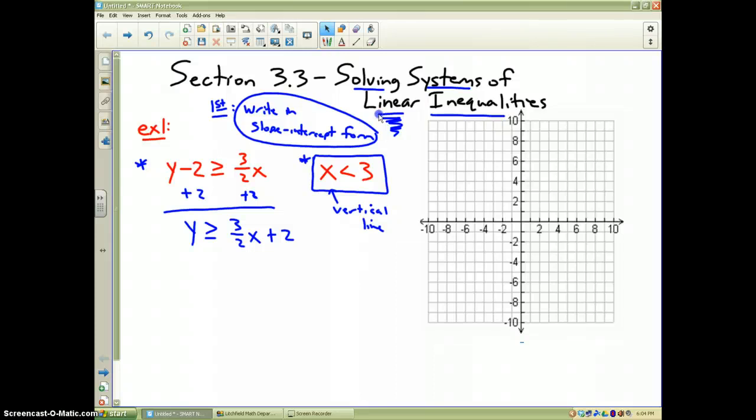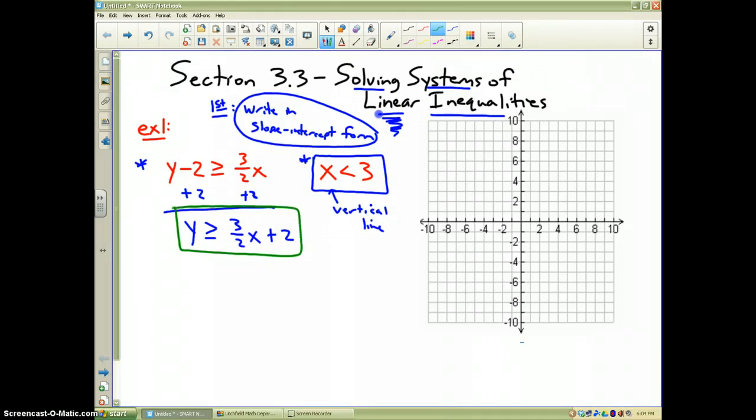Now very simply, I'm going to plot both lines. I'm going to start with this one, which I'm going to do in green. It says y is greater than or equal to 3 halves x plus 2. Two is the y intercept value and my slope is 3 halves. So I'm going to rise 3 and go over 2 and up 3 and over 2.